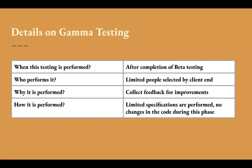Here are a few details about gamma testing — when this testing is performed, who performs it, why and how it is performed. Gamma testing does not include any predefined QA activities to perform. The whole product is not tested in this phase; only limited specifications or functionalities are tested. There is no hard and fast rule to perform it — it is just performed for safety before launching the product.